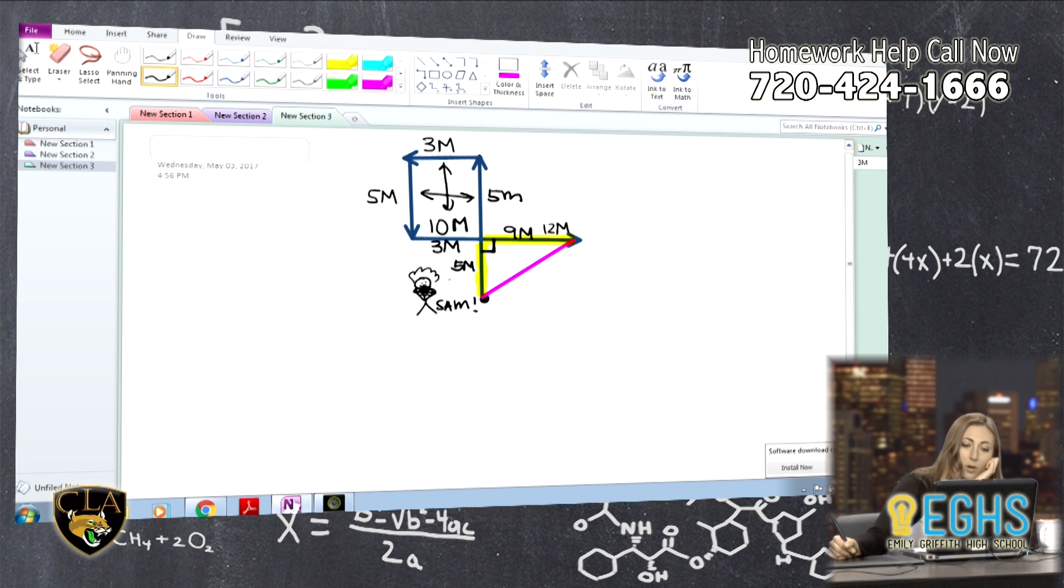So that makes sense. So because this and this, these two are the same. Right. Those two are the same. So that must mean that this is five. That's right. Good.